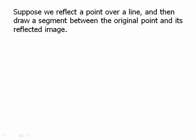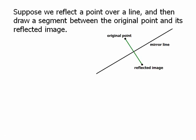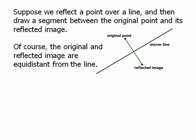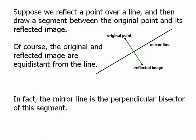Suppose we reflect a point over a line and then draw a segment between the original point and its reflected image. We have an original point, a reflected image, and we draw a green segment connecting them. The original and the reflected are equidistant from the line, but more than that, the mirror line is the perpendicular bisector of that segment. That's a big idea — a mirror acts as a perpendicular bisector.